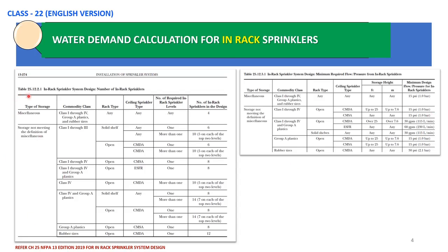From Table 25.12.2.1 we can identify the number of in-rack sprinklers to be considered in our design to calculate the water demand. From Table 25.12.3.1 we can determine the minimum design flow and pressure for in-rack sprinklers. I will explain in detail.